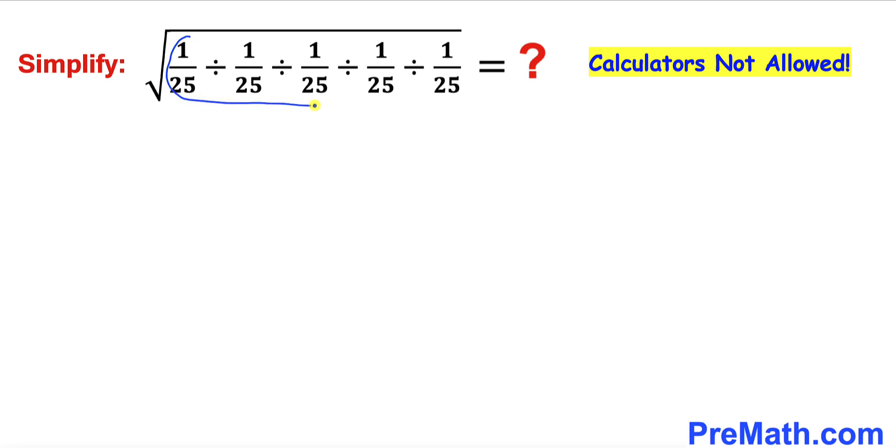Here's our very first step. Let's focus on this radicand part inside this square root, and here I have copied it down. Now let's recall this basic concept of fractions: if we have a over b divided by c over d, then we can convert this division sign into multiplication and flip this fraction to d divided by c.